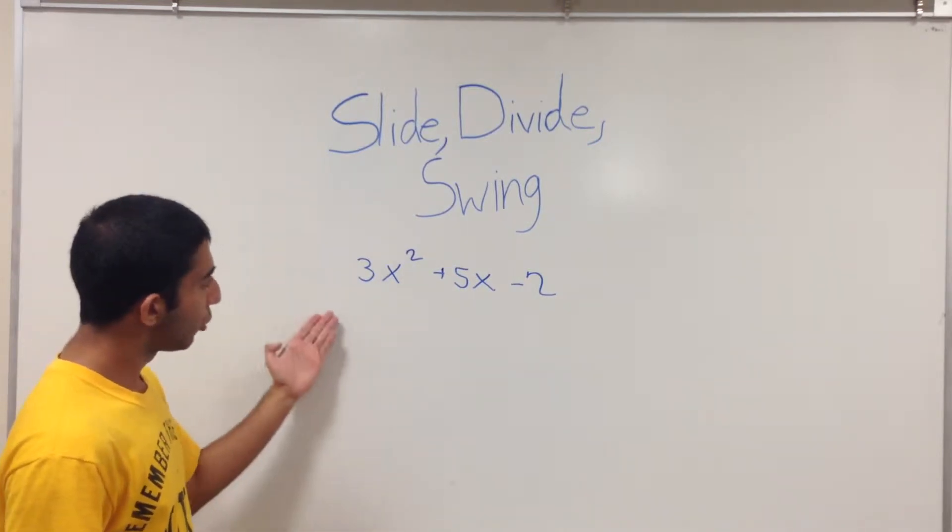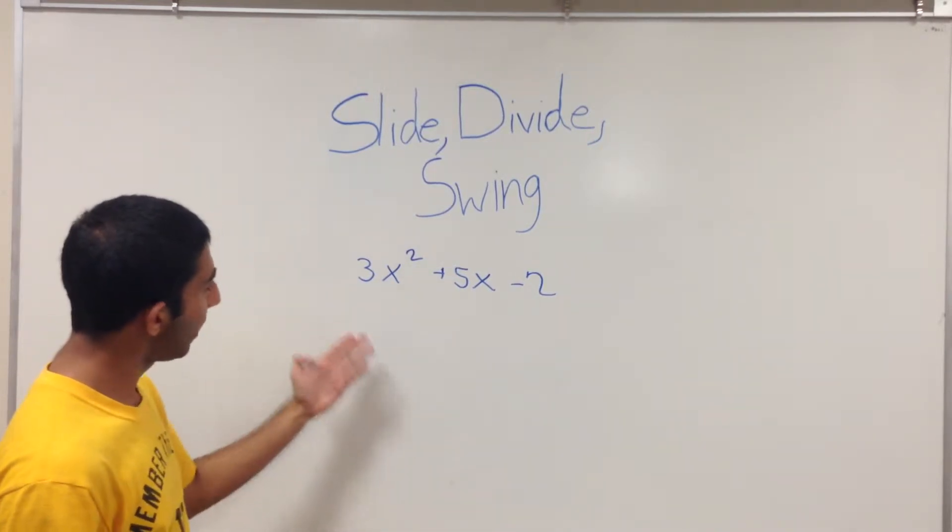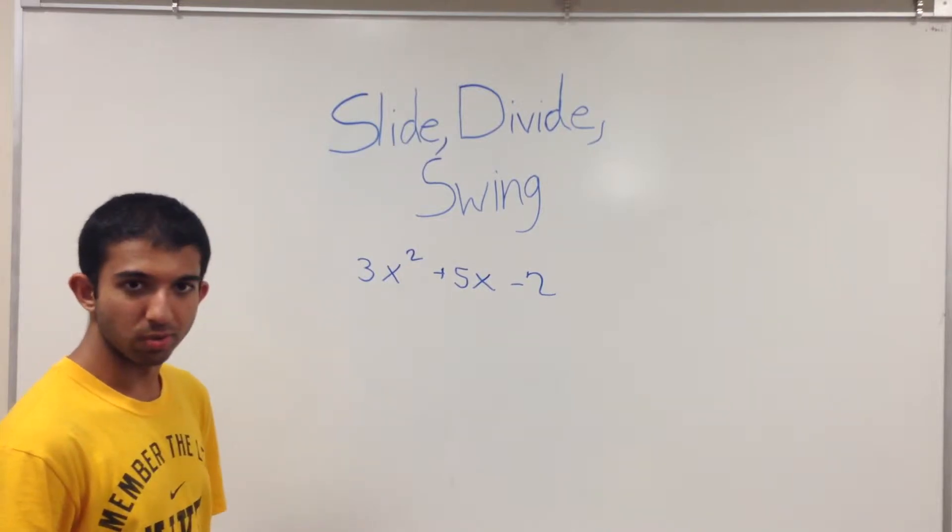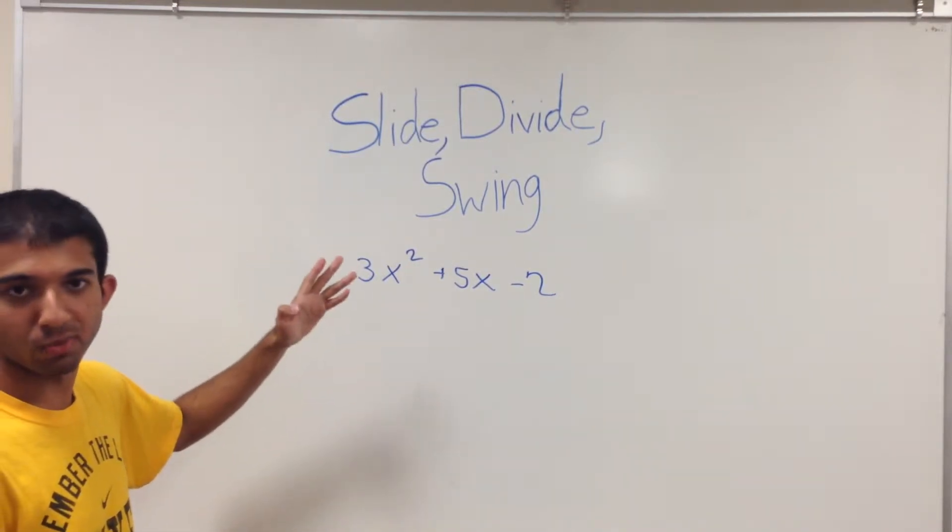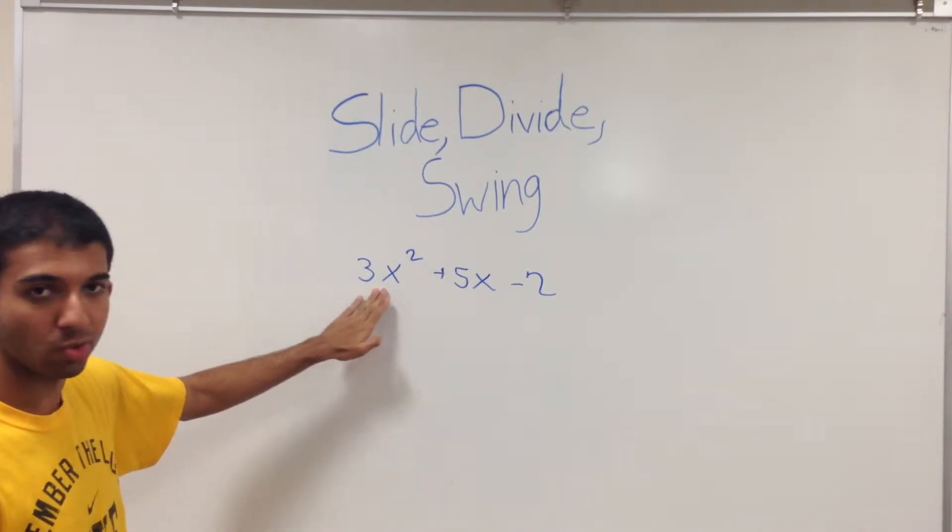When you are factoring, let's say you have this problem right here, 3x squared plus 5x minus 2. And as you can see, it's almost impossible for you to factor this when you have the 3 in front of the x squared.